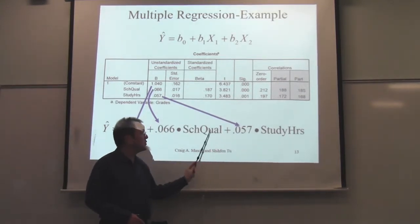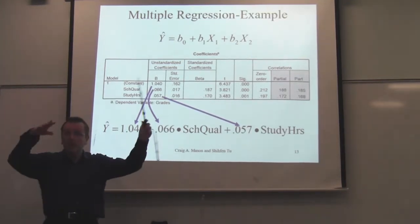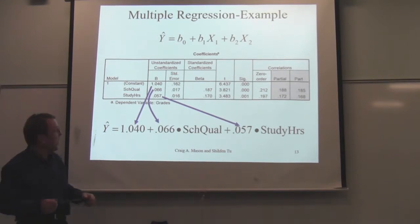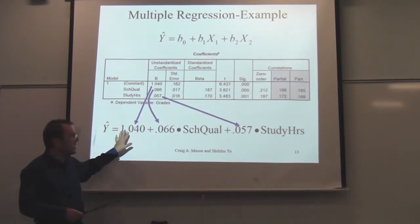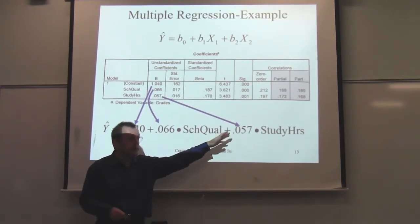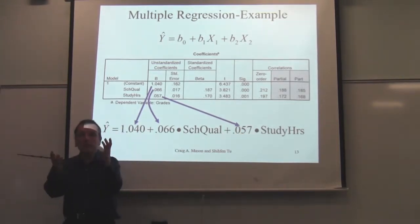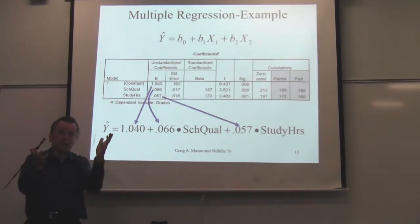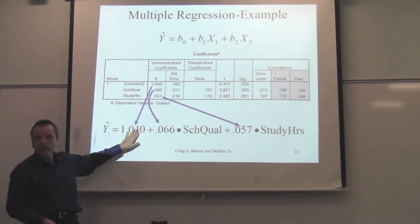Just like with simple regression, if two people have the same values for school quality and study hours, their predicted scores are going to be exactly the same regardless of other differences. Predicted scores are only based on those two variables. Notice the general idea: we're taking regression coefficients — a bunch of B's or betas — and multiplying them by corresponding X's. You take your predictors, multiply them by their regression weights, add the constant, and get your predicted score.